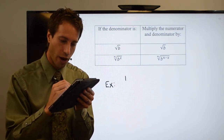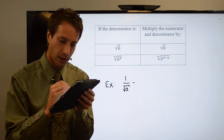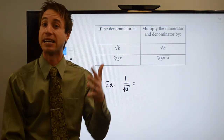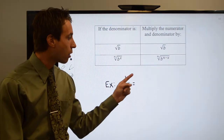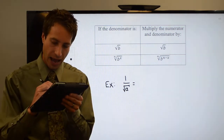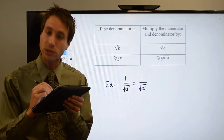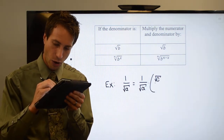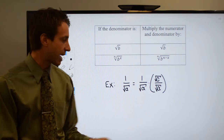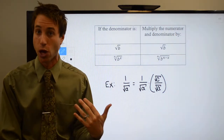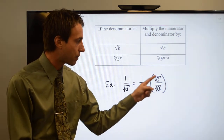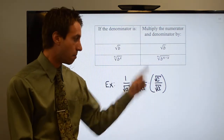Let me show you — it's easy. If you have 1 over the square root of a, I immediately check to see what my index is. My index is a 2. All I need to do is multiply top and bottom by whatever that radical is. So I'm going to have 1 over the square root of a, multiplied by the square root of a over the square root of a. That's all you have to do. If the index is 2 or there's no index written, you just multiply top and bottom by whatever that radical is.